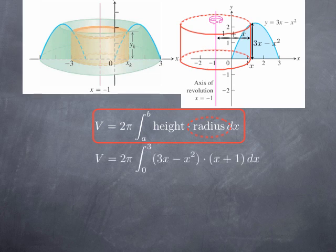Therefore I obtain for the volume the integral formula 2π integral from 0 to 3 of 3x minus x squared which was my height multiplied by x plus 1 which was my radius.